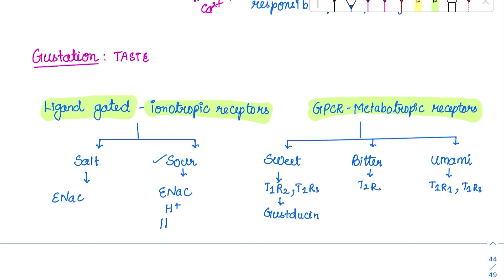Finally for sour taste, there is also HCN — hyperpolarization-activated cyclic nucleotide-gated channel. This channel will be discussed again in detail in the context of the cardiovascular system.